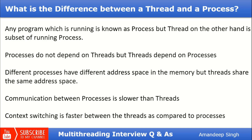Communication between processes is slower than between threads. Context switching is faster between threads compared to processes. Context switching is a concept where the CPU changes execution from one process to another — that is slower in the case of processes, but if the CPU has to switch between threads, that context switching is faster.